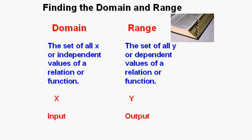Let's consider input and output. Input comes first, so we associate input with domain and output with range. Let's consider the vertical and horizontal axes of a graph. Which comes first in the dictionary — vertical or horizontal? It's horizontal, so horizontal is associated with domain and vertical with range.